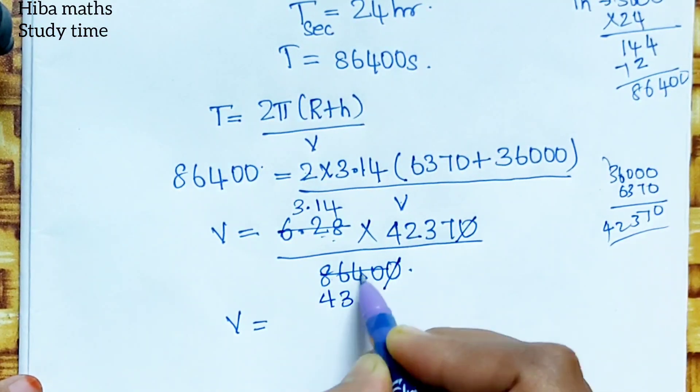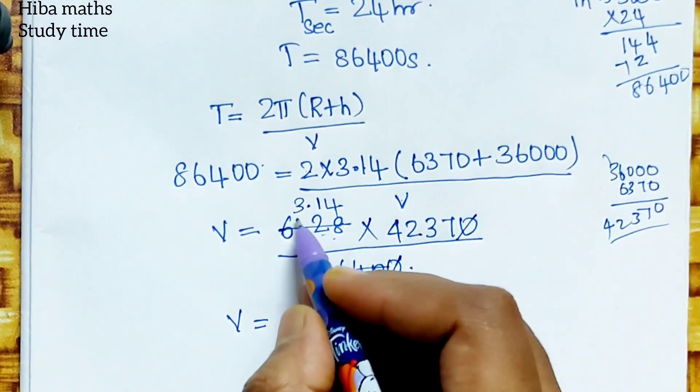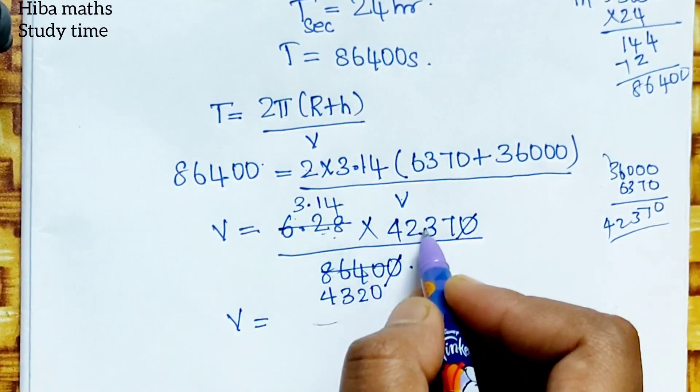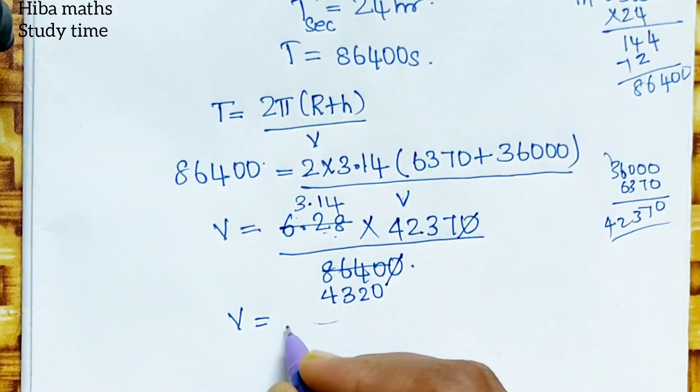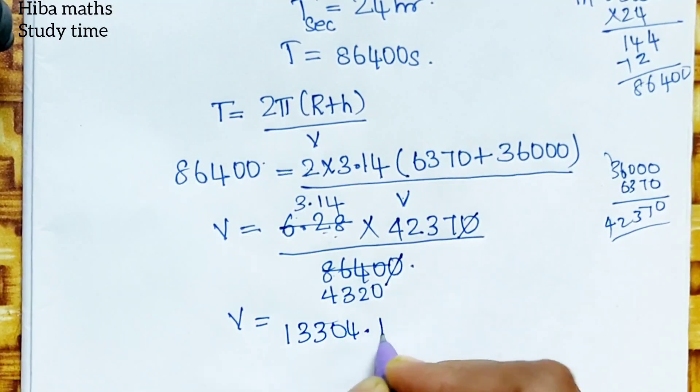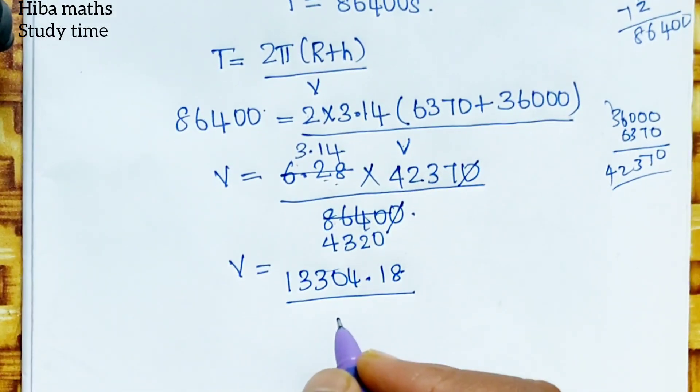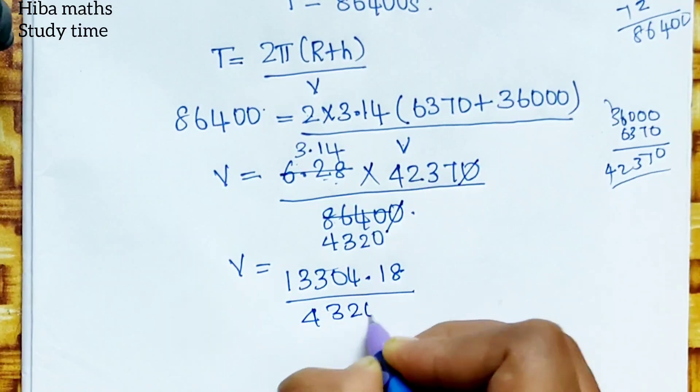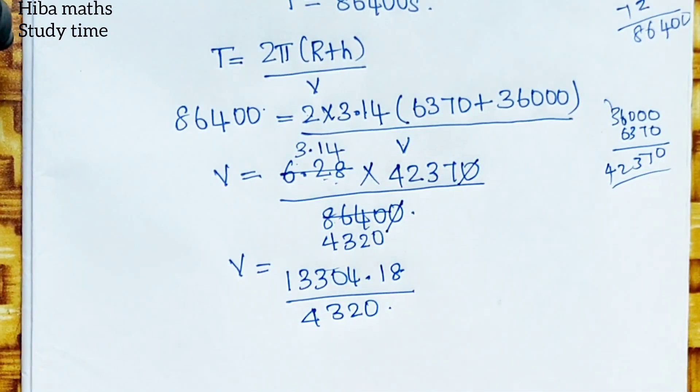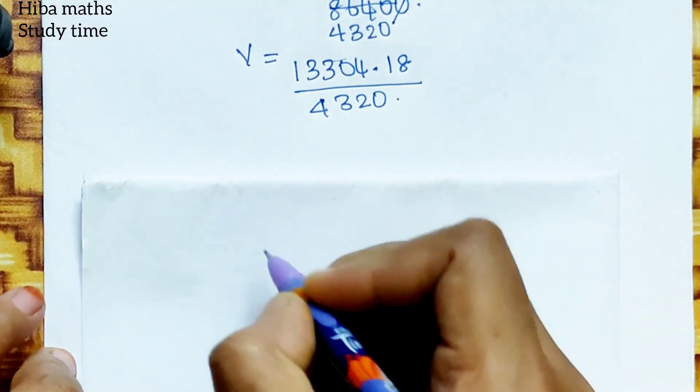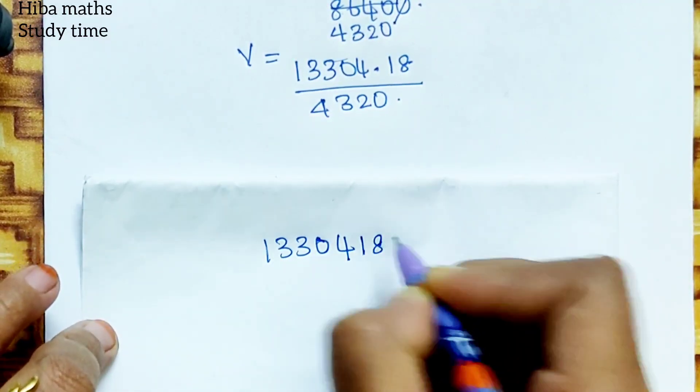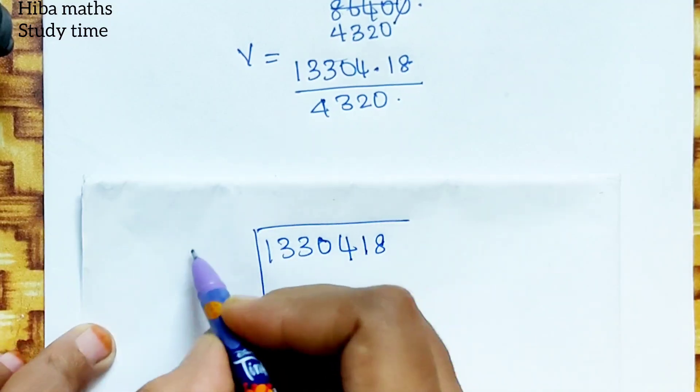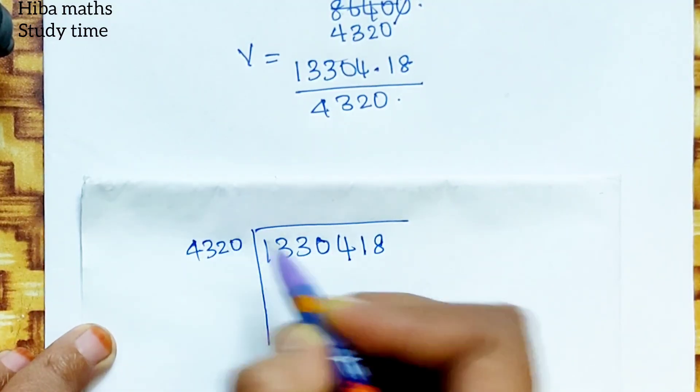Next step, we multiply the two. 3.14 into 42,370. Now we multiply the same. 1, 3, 3, 0, 4, 1, 8. We multiply the division. 4, 3, 2, 0, balance. Now we divide the division. We divide the division. 1, 3, 3, 0, 4, 1, 8. 4, 3, 2, 0. Now the first 4 is 13.